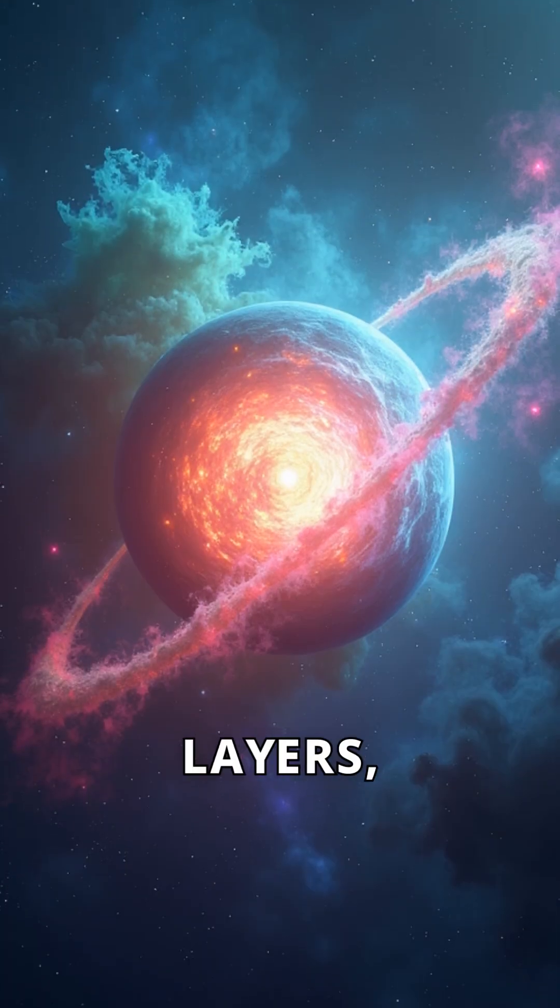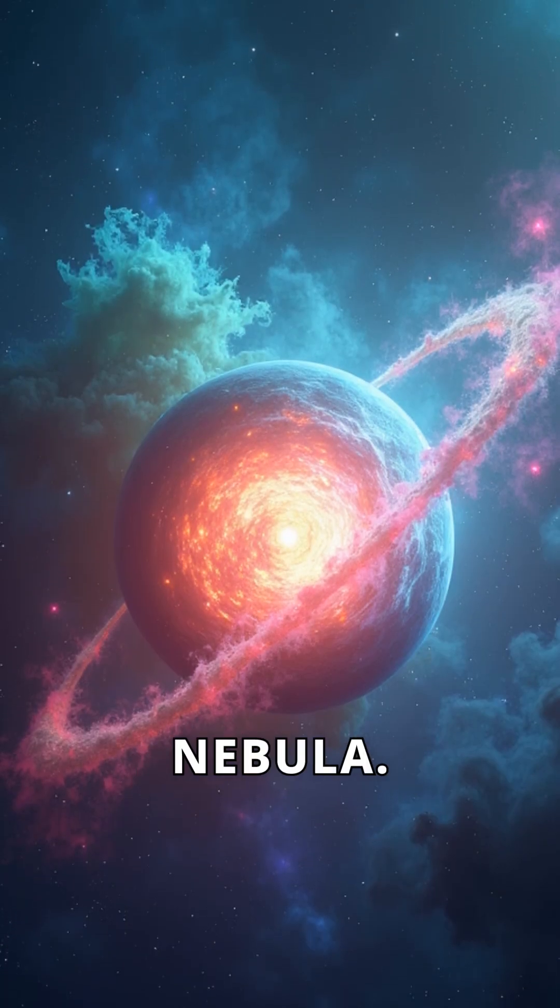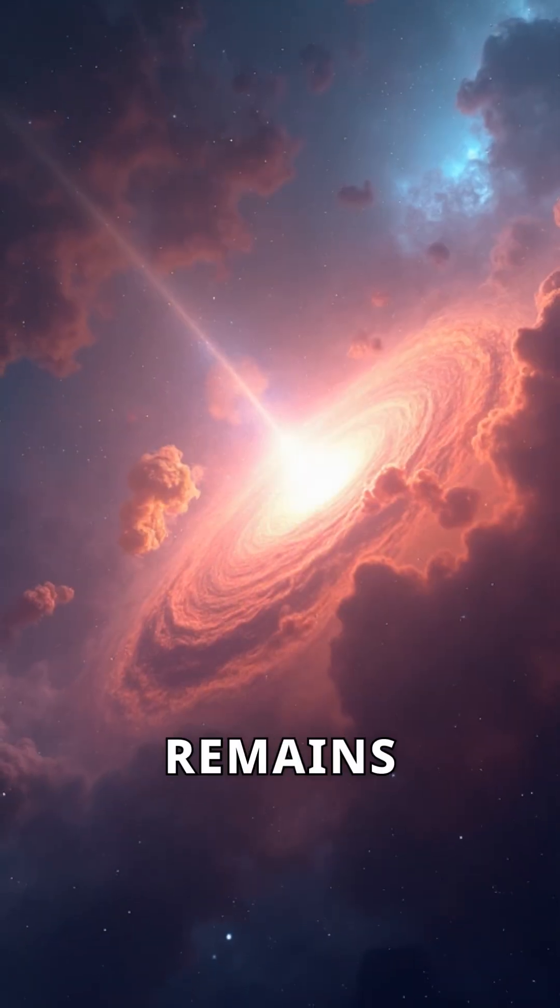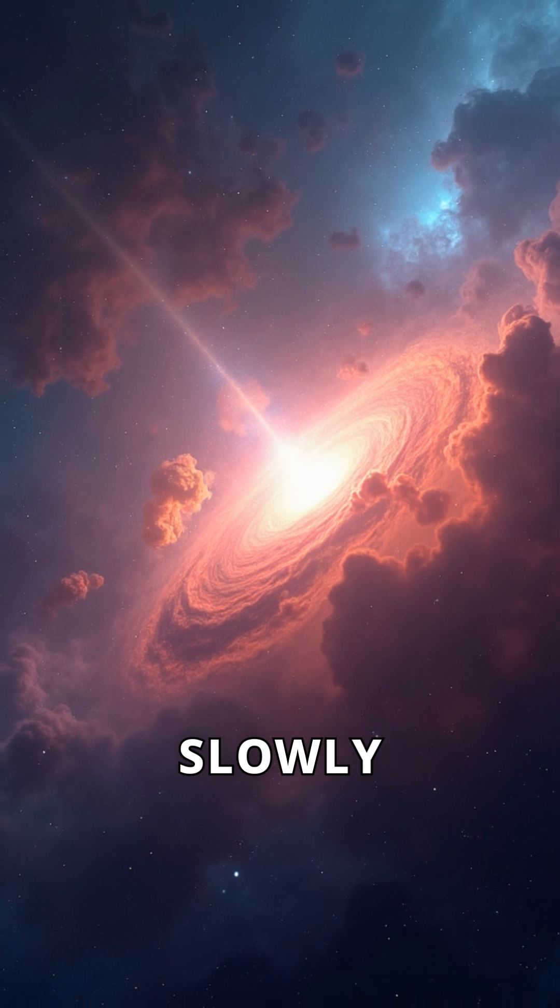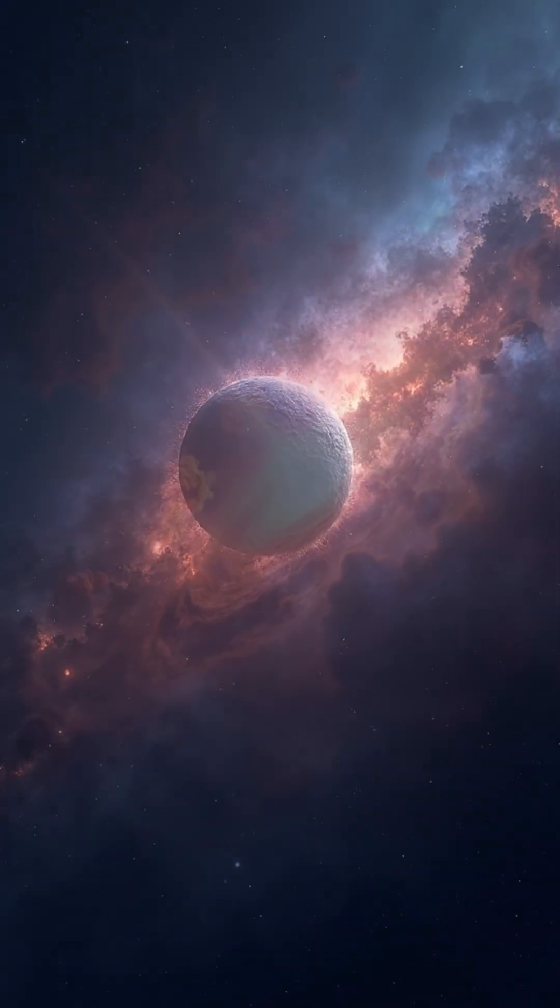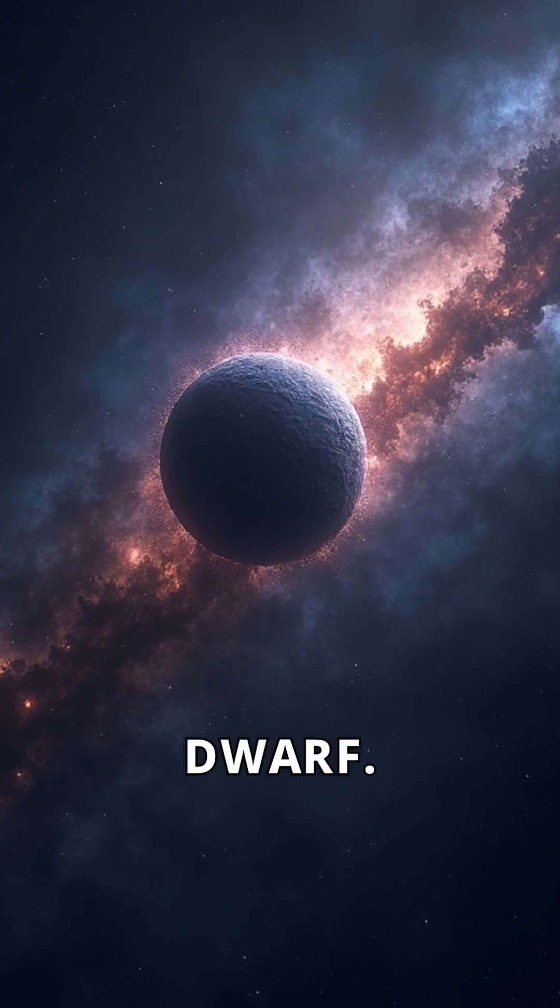Then it sheds its outer layers, creating a planetary nebula. What remains is the core, a white dwarf, slowly cooling. Over billions of years, it fades into a cold, black dwarf.